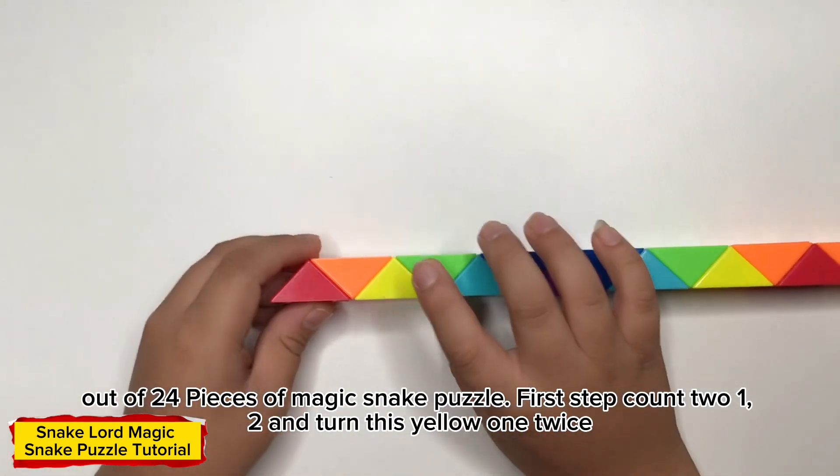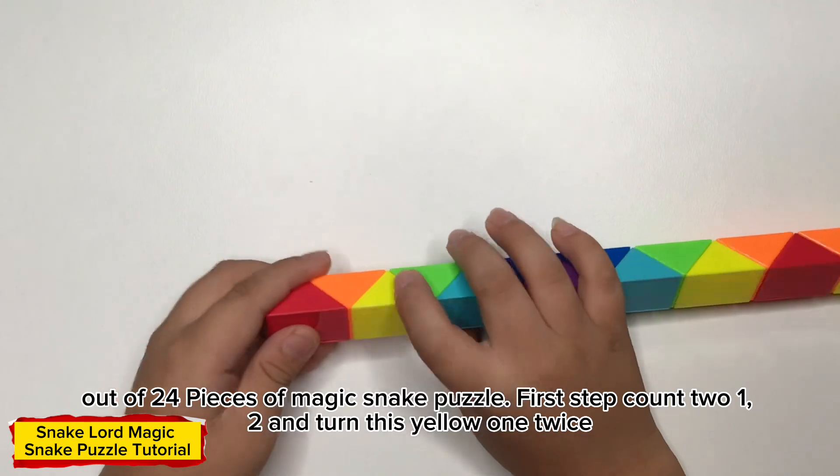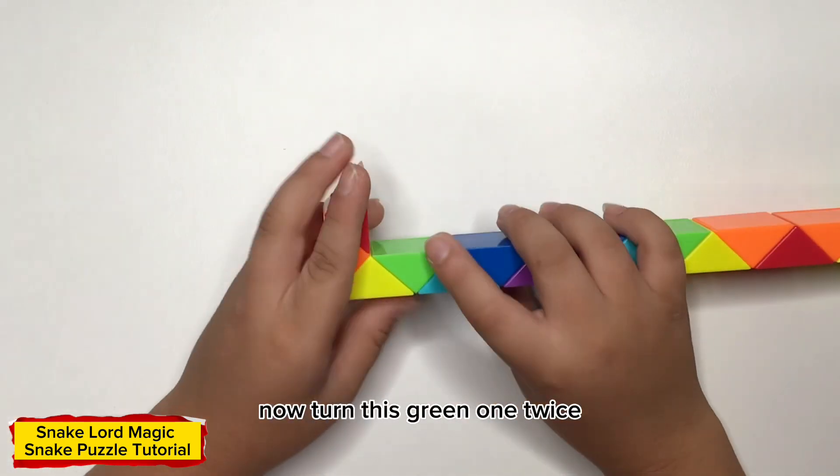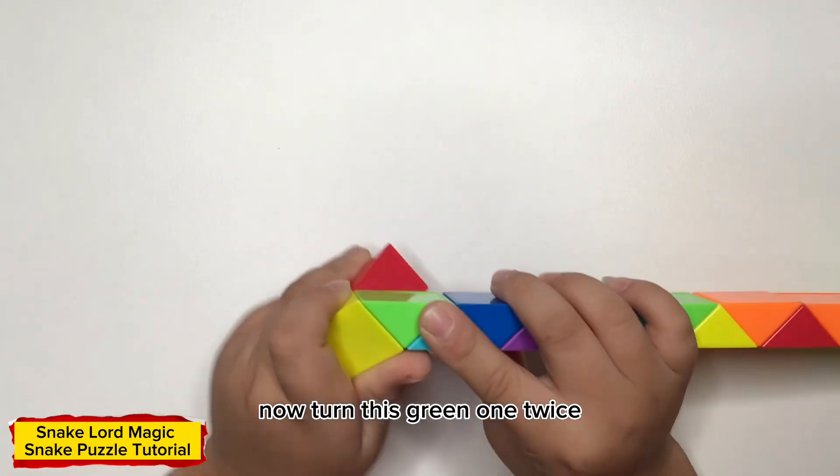First step, count to 2 and turn this yellow one twice. Now turn this blue one and bring on twice.